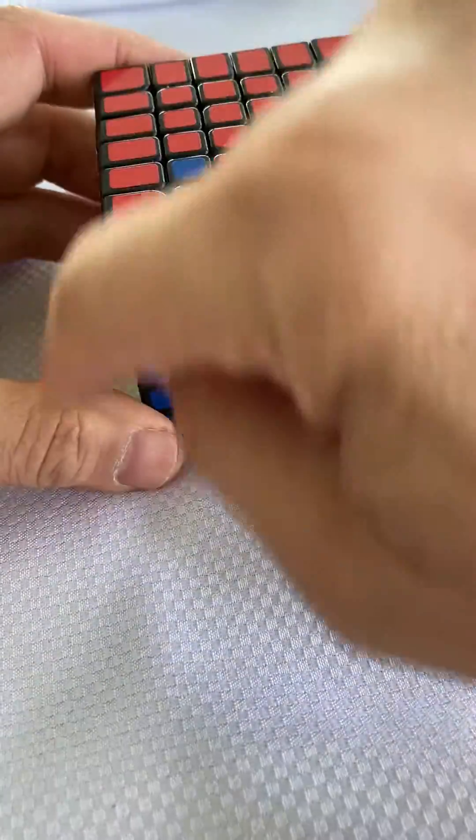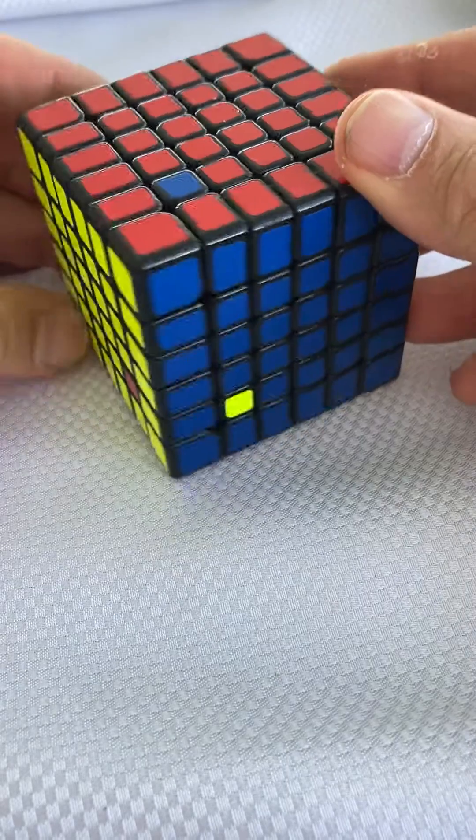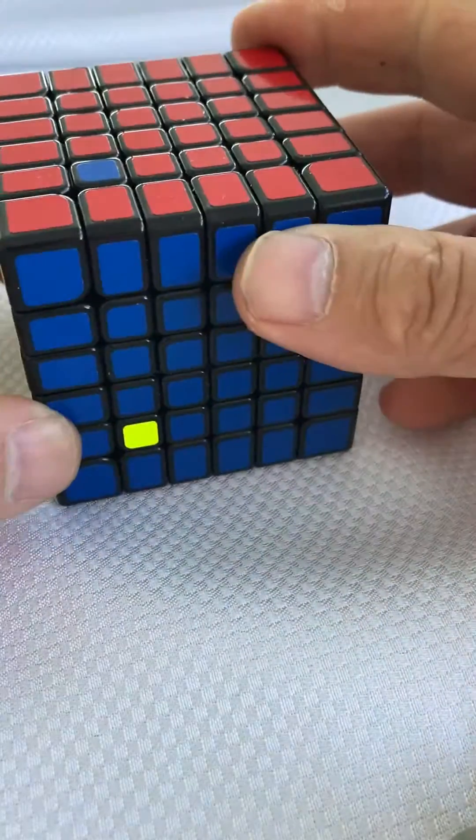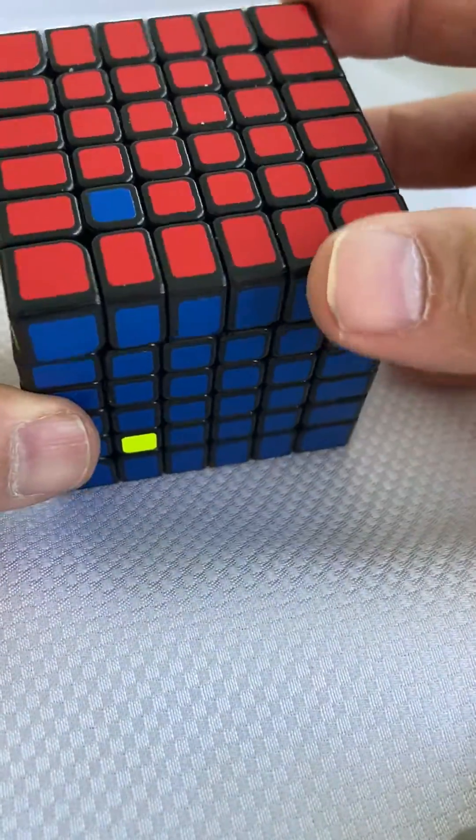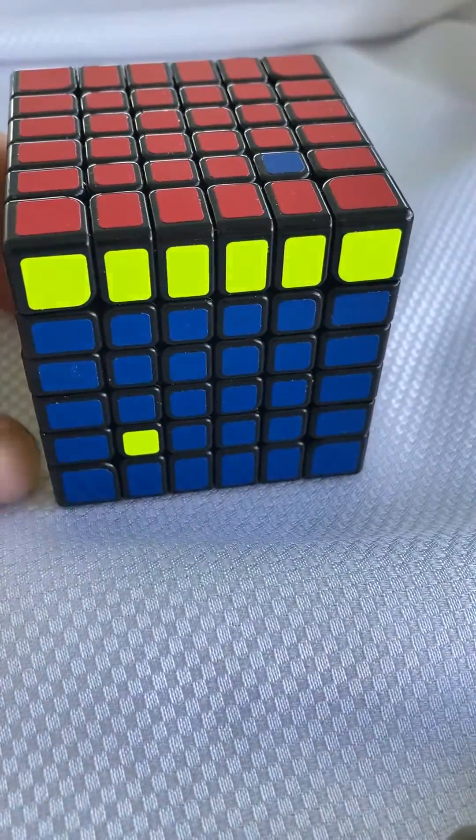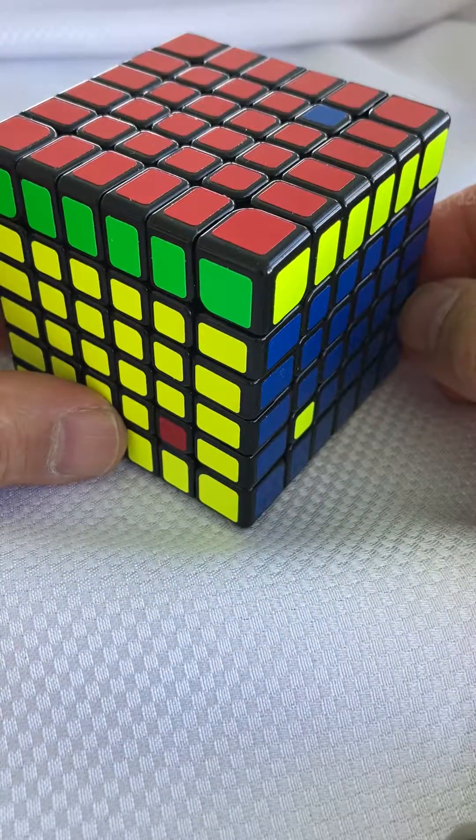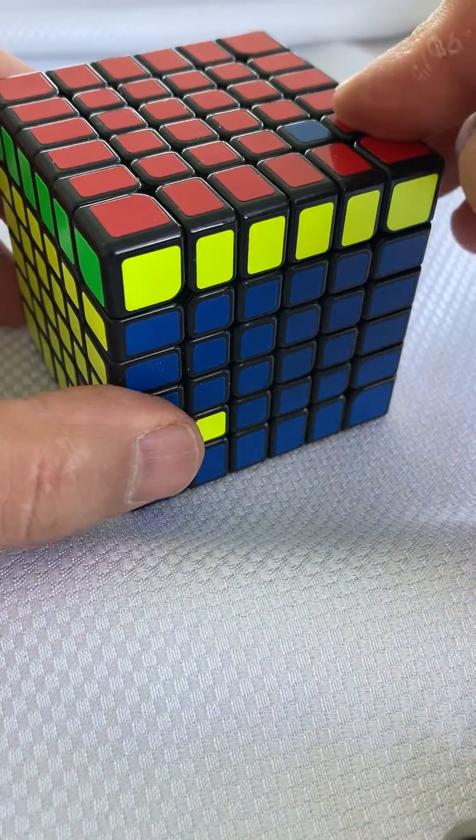So it swaps these in a counterclockwise manner. I'm going to take this and turn it either way, and I'm going to put this red back in, but back to where there's already a red. So I'm going to do the opposite way though.